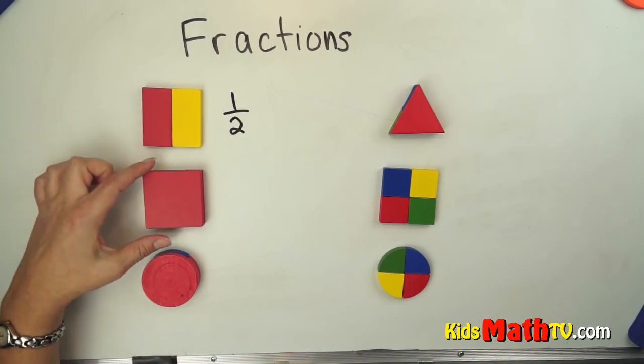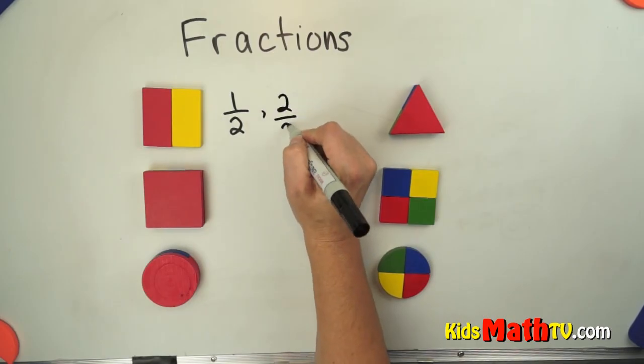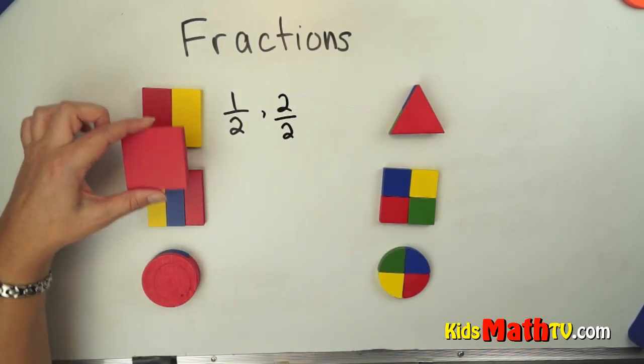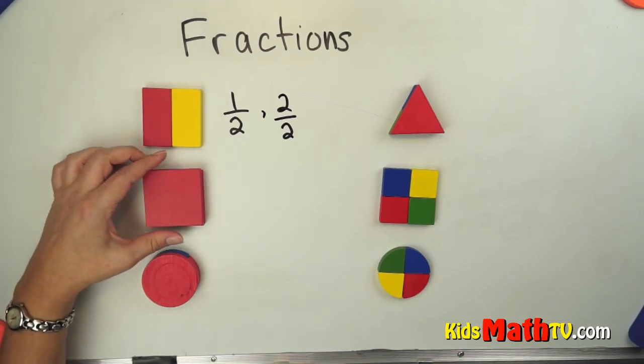We also have two halves. We can write it as two halves. We also call two halves one whole, but we can call it two halves.